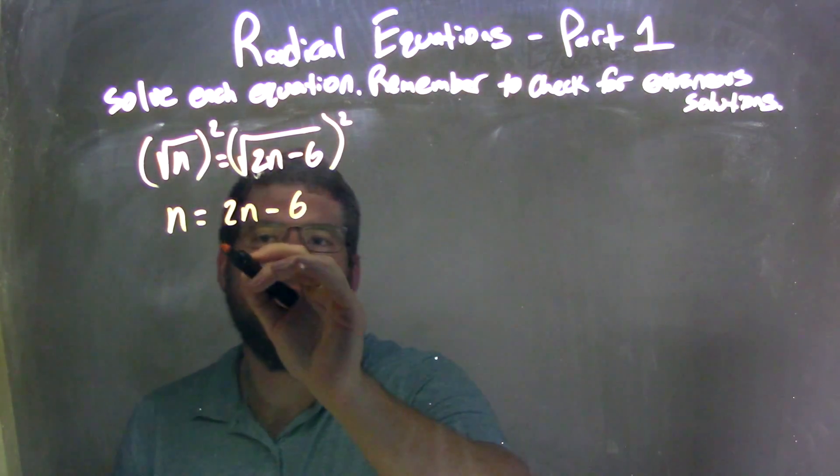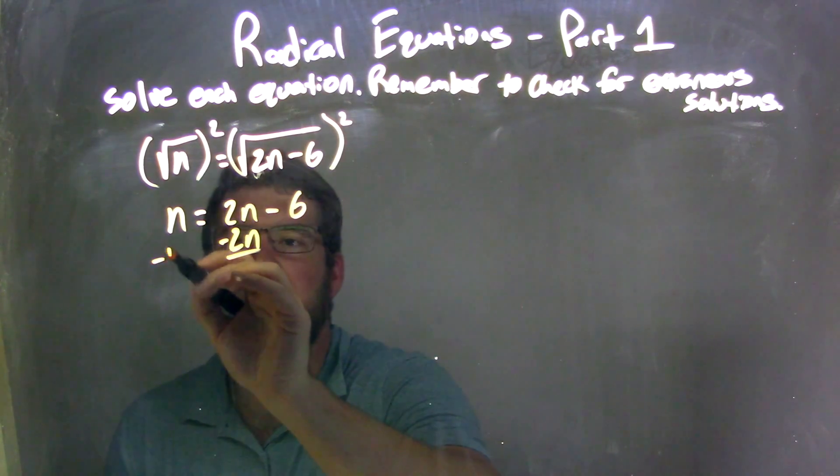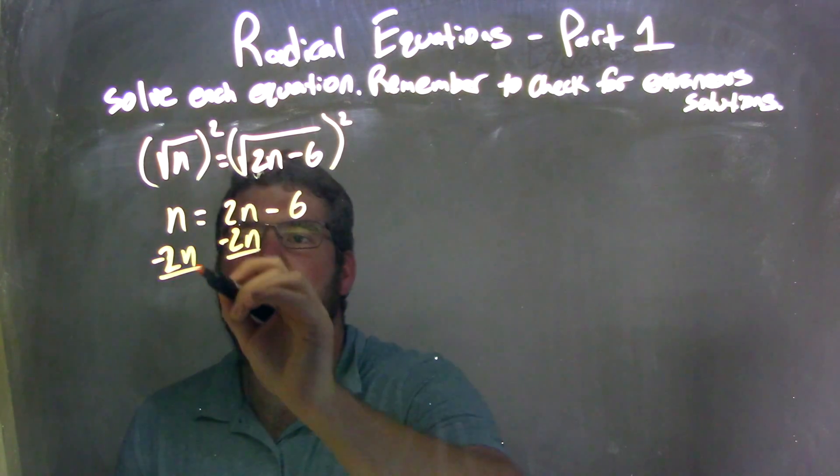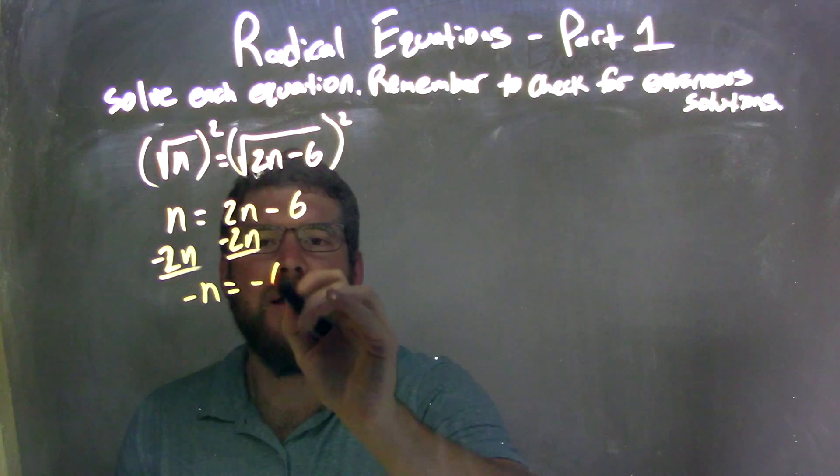Well, I'm going to subtract the 2n to both sides, get the n together. n minus 2n is negative n equals negative 6.